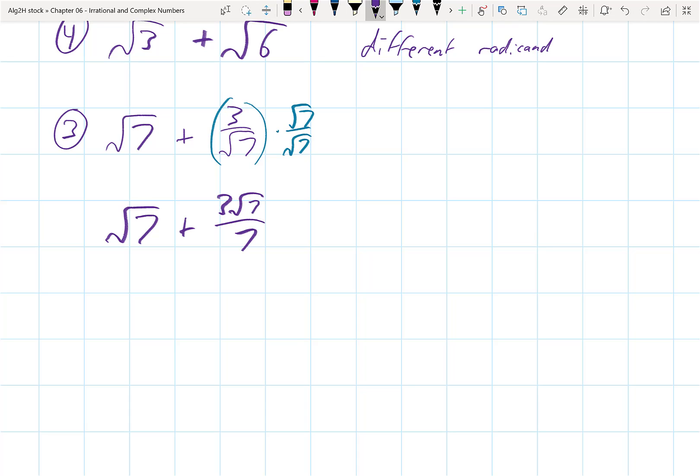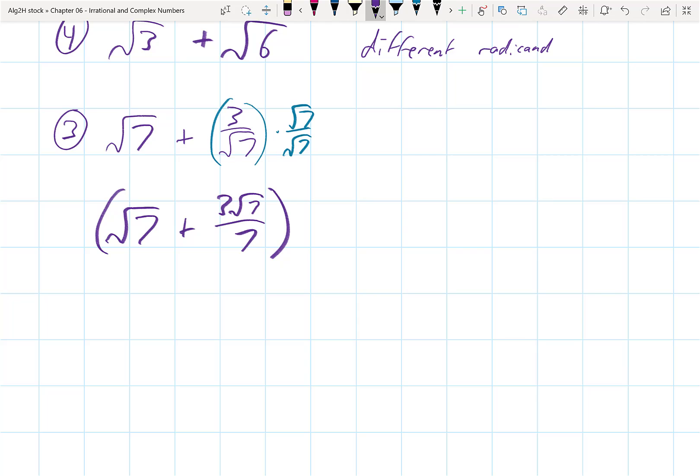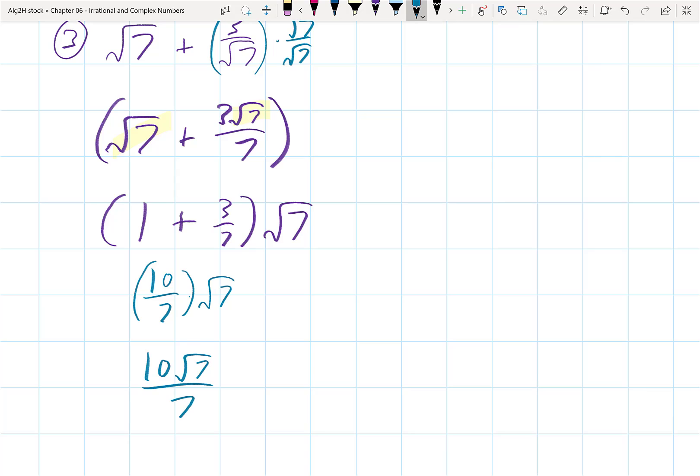Now, this number, if I actually think about this and I were to put this in parentheses and factor the root 7 out, that's the same as 1 plus 3 sevenths times root 7. Think about the root 7 as being a greatest common factor. 1 plus 3 sevenths is 10 sevenths, and this would be 10 sevenths times root 7, which would probably be written as 10 root 7 over 7. But typically what you're going to do with a problem like that is just do an LCD of 7, and then add 7 root 7 plus 3 root 7 all over 7 to get the same thing.